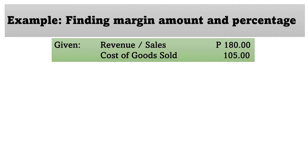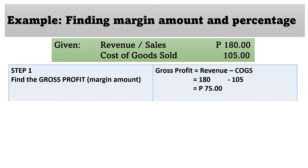For further understanding, here is another sample problem. We are going to find the margin amount and its percentage. The given are revenue (sales) of 180 pesos and cost of goods sold of 105 pesos. Step one is to find gross profit, the margin amount. Gross profit equals revenue minus cost of goods sold: 180 minus 105 equals 75 pesos. Once we say gross profit, only the cost of goods sold is deducted — operating expenses are not yet deducted.